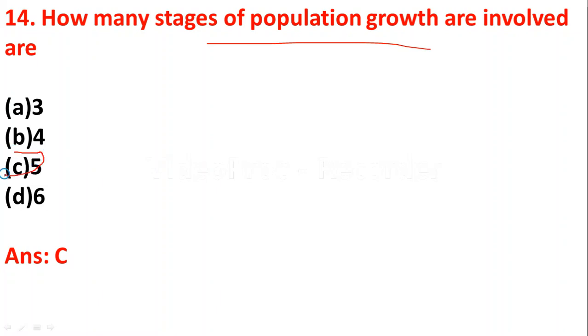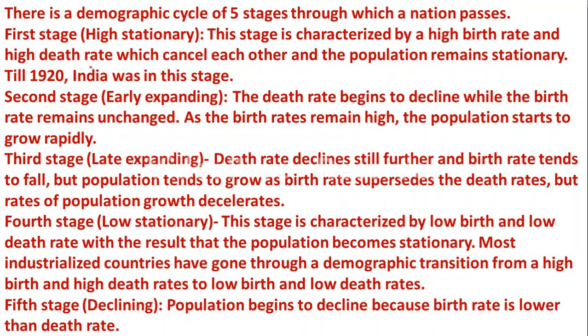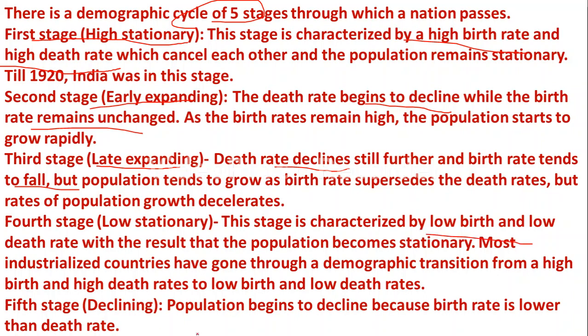Question 14: How many stages of population growth are there? There are five demographic stages. Stage one, 'high stationary,' is characterized by high birth rate and high death rate. Stage two, 'early expanding,' has death rate starting to fall while birth rate remains high. Stage three, 'late expanding,' sees both death rate and birth rate declining. Stage four has low birth rate and low death rate. In stage five, population starts rising and death rate is decreasing.